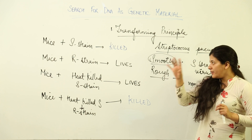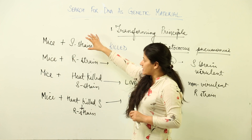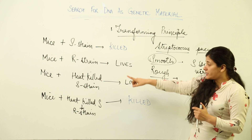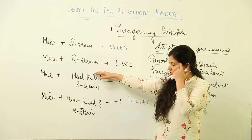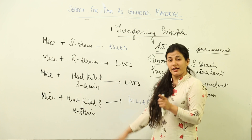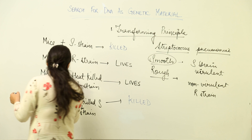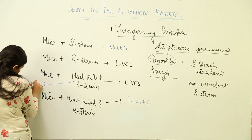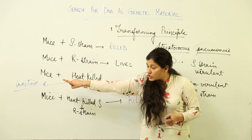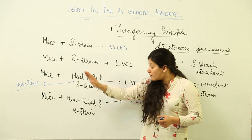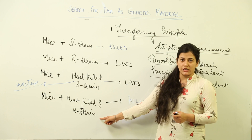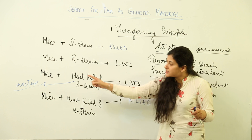The S strain had some information-carrying molecule with enough information to kill the mice. The R strain lacked this molecule. When the S strain was heat-killed, that molecule became inactive, so the information did not pass and the mice survived. But when the heat-killed S strain — with its now-inactive information-carrying molecule — was brought into contact with the living R strain, it transformed the information present in R strain.